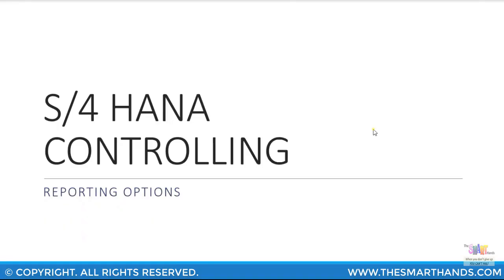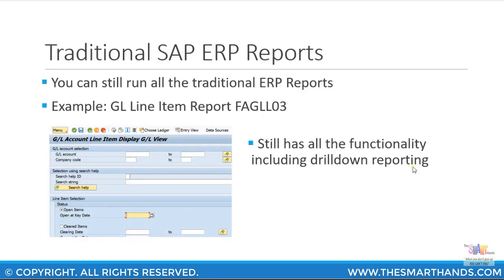In this presentation we'll look at the reporting options for S4HANA. While running S4HANA, you can still run all your traditional SAP ERP reports such as FAGLL03 for GL account line items, FBL3N, FBL1N, all your GL open items, vendor open items, and custom open items. All your legacy transactions will still work in S4HANA, but there are some additional reports given by S4HANA that will give you better insight into the data.